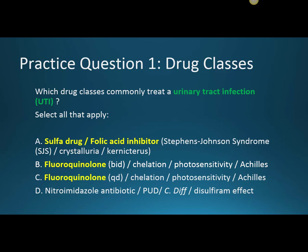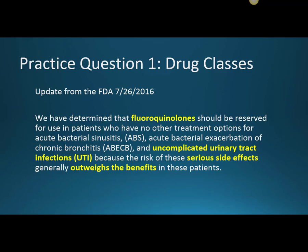Here are the answers. The common drug classes for UTIs are the sulfa folic acid inhibitor combination and the fluoroquinolones. But let's go to that FDA notice: fluoroquinolones should be reserved for uncomplicated urinary tract infections only when there are no other options, because serious side effects outweigh the benefits. So where Cipro and levofloxacin would have been readily dispensed for a UTI, prescribers are going to be quite a bit more cautious with this FDA mandate.